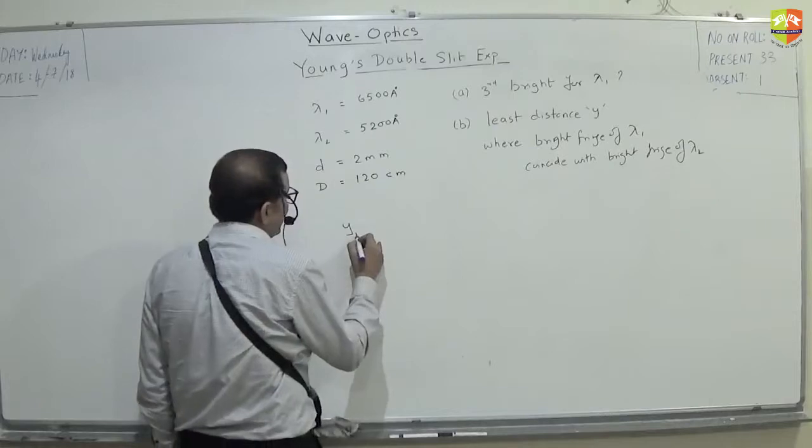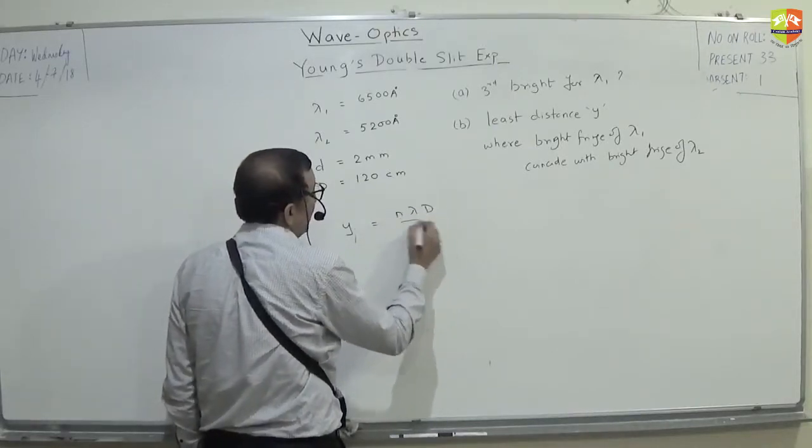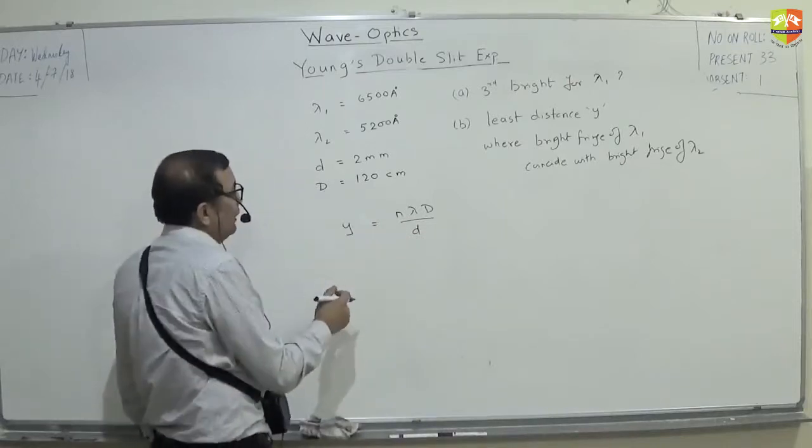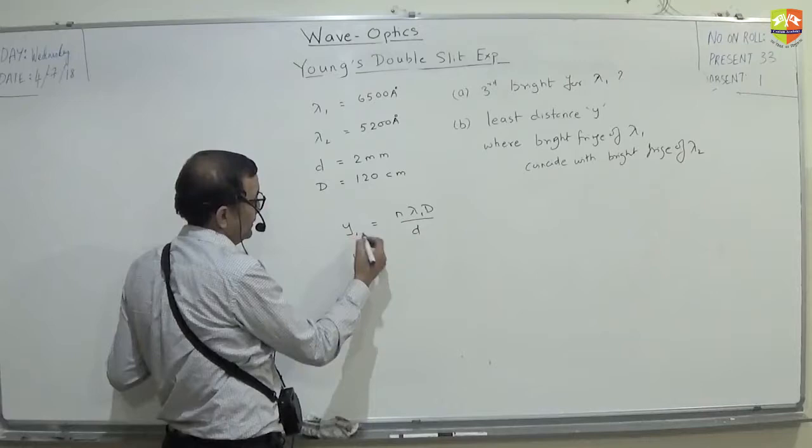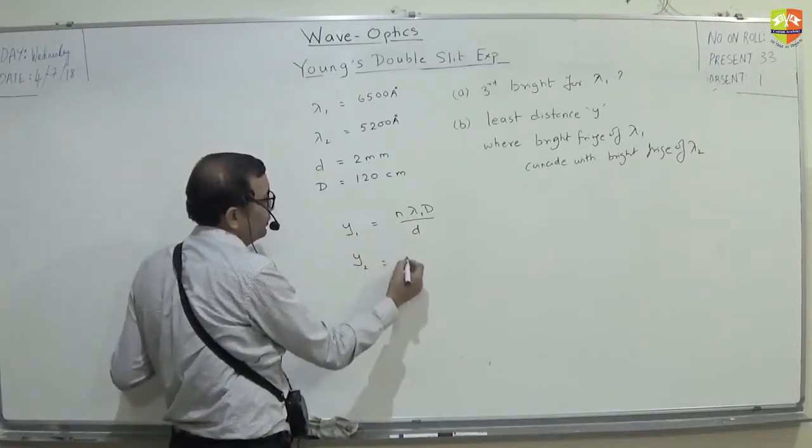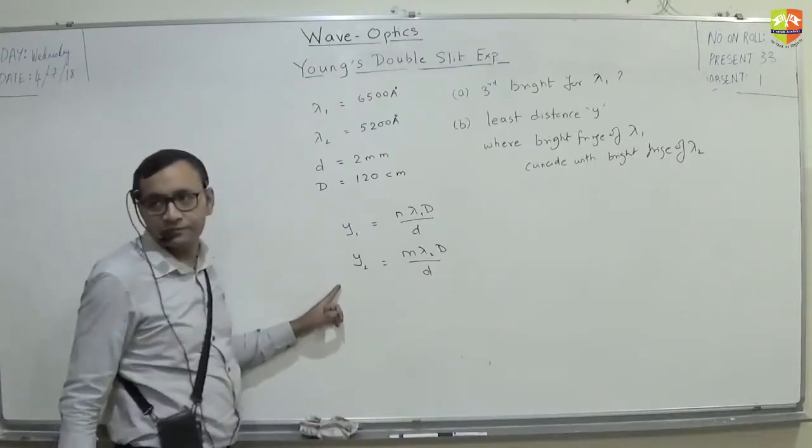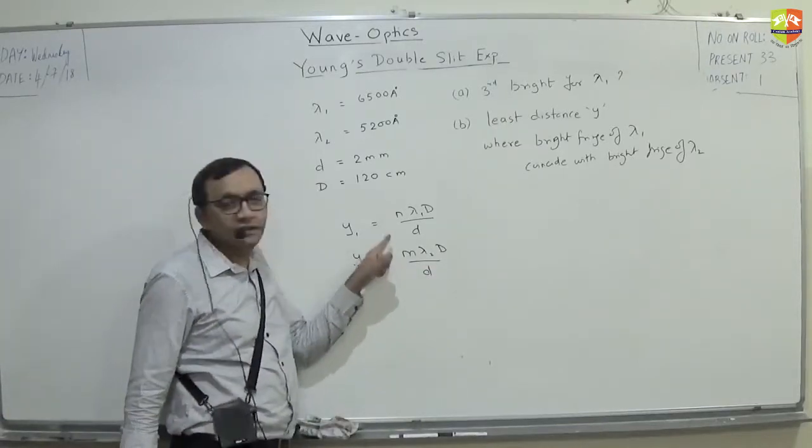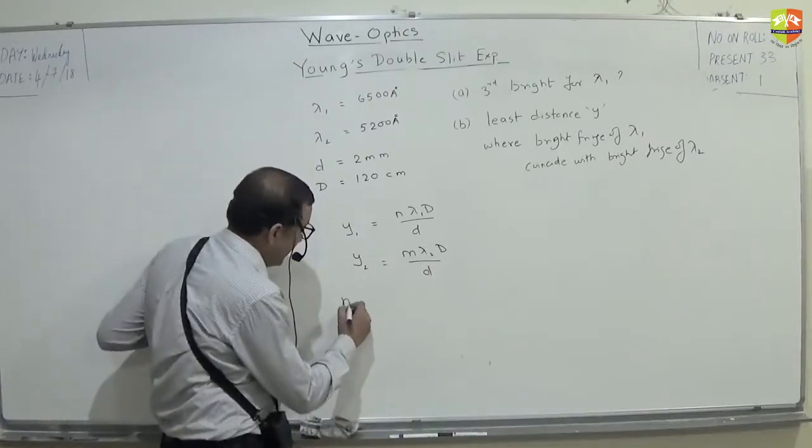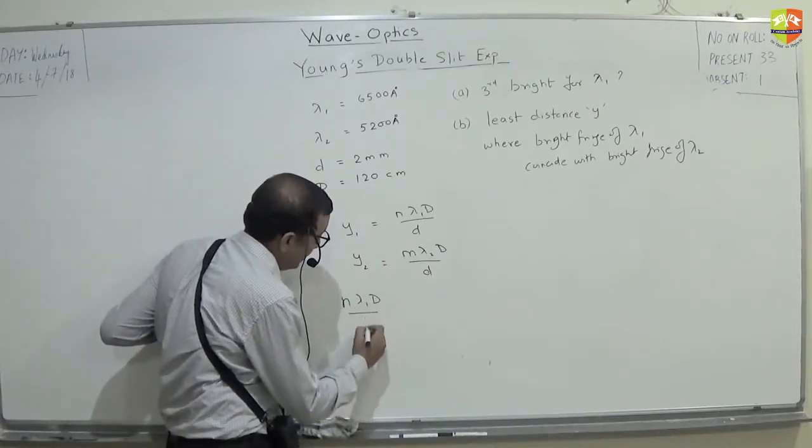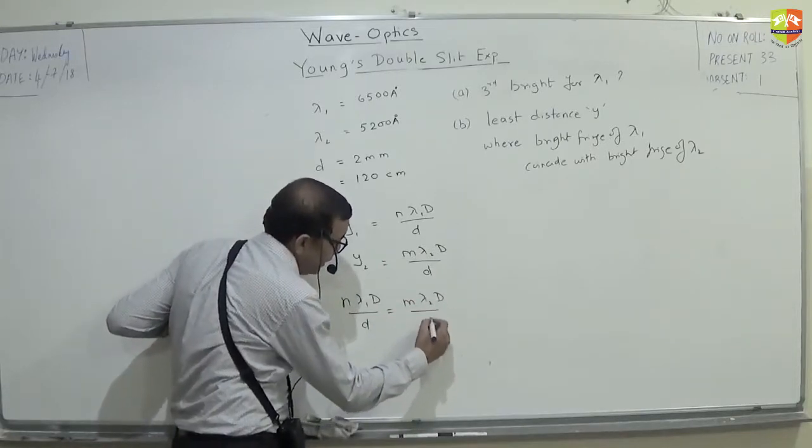See, the location of maxima is what? n lambda D by d. Now this is for lambda 1. For y1 and y2 will be m times lambda 2 D by d. Are you getting this? See, this integer and this integer need not be same. Fine. So, n lambda 1 D by d will be equal to m lambda 2 D by d.